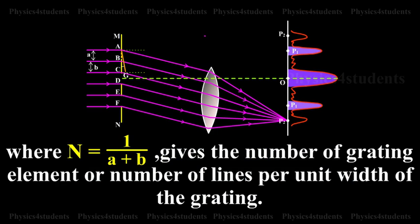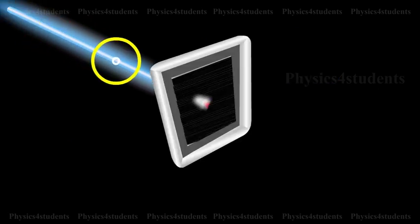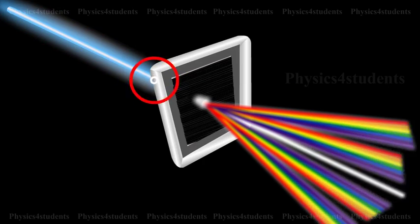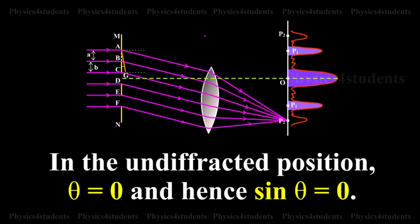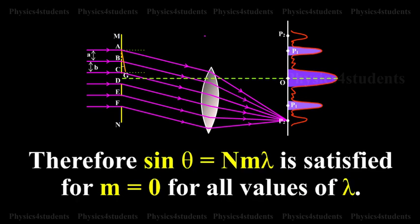When white light is used, the diffraction pattern consists of a white central maximum and on both sides, continuous colored images are formed. In the undiffracted position, theta equals 0 and hence sin theta equals 0. Therefore, sin theta equals N M lambda is satisfied for M equals 0 for all values of lambda.